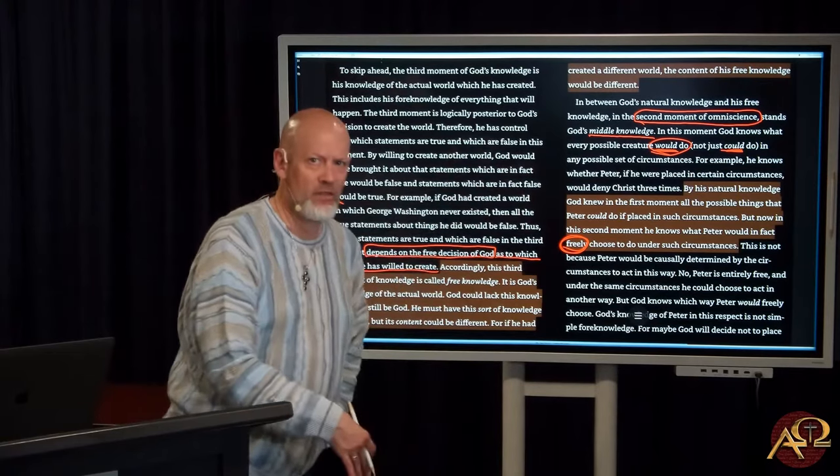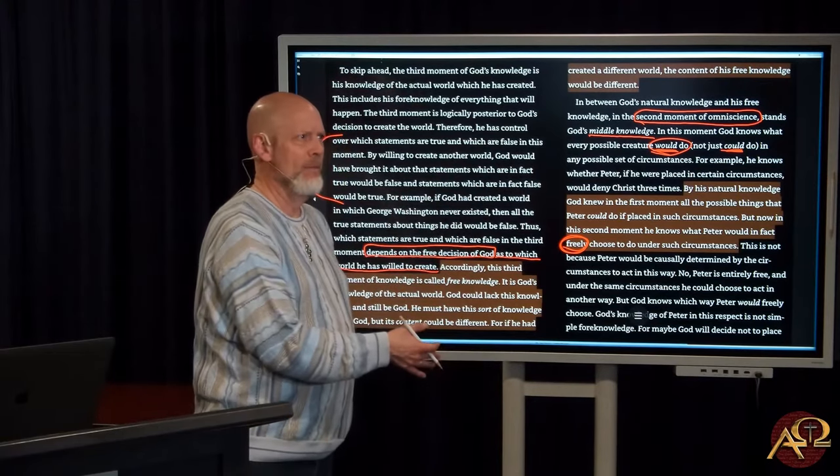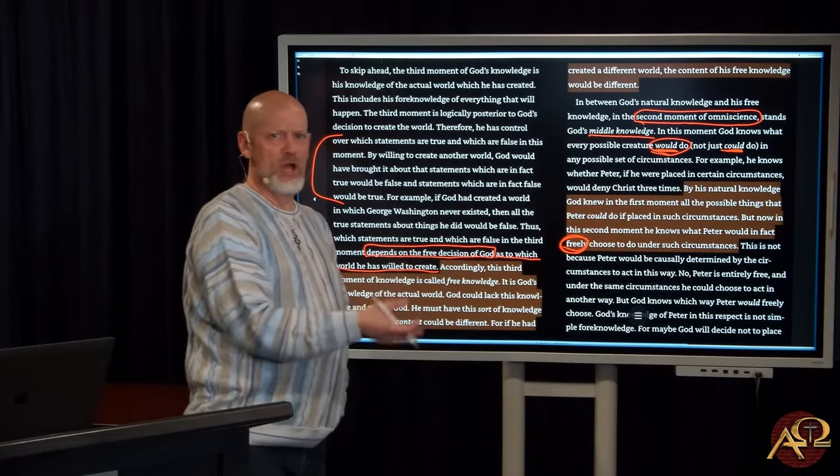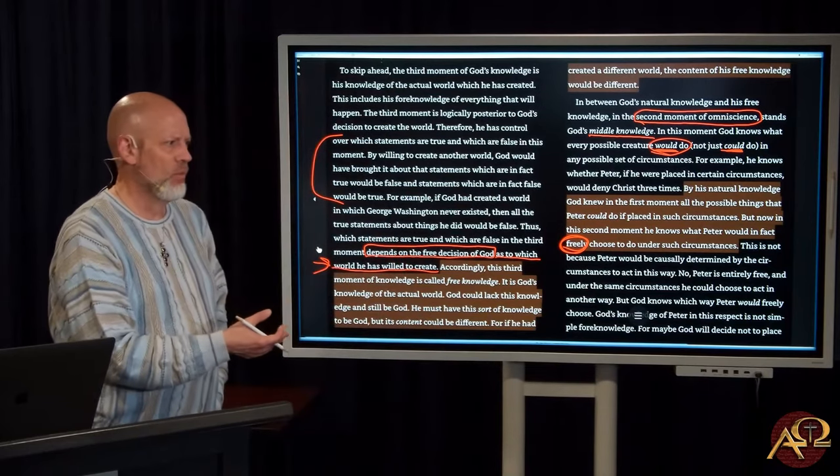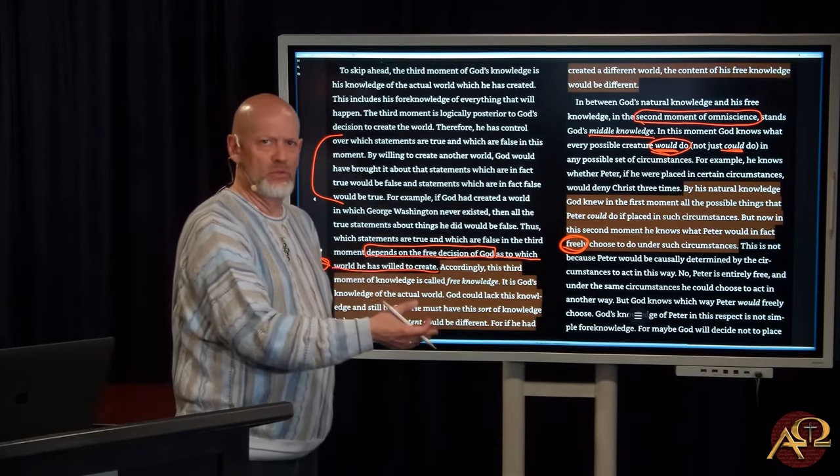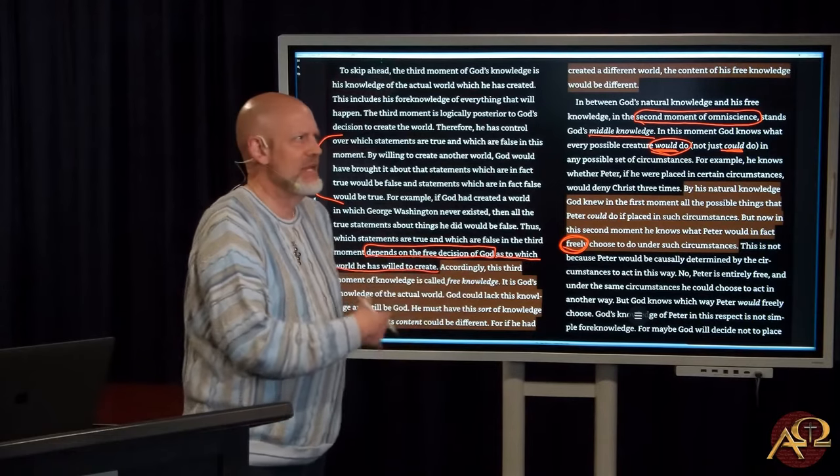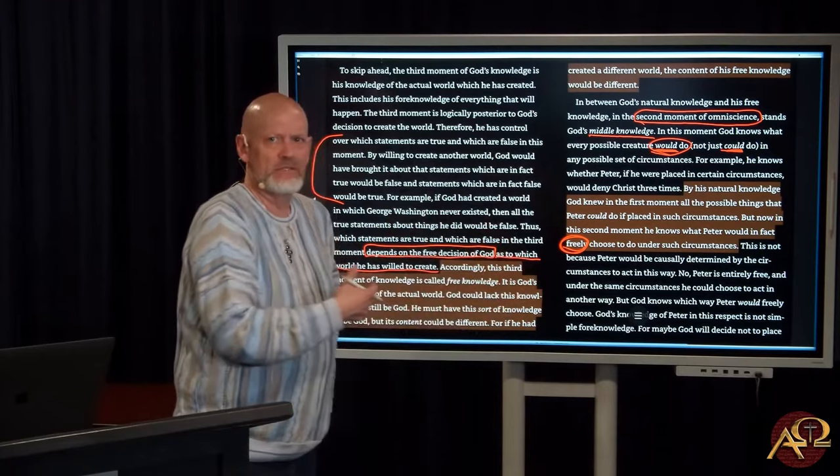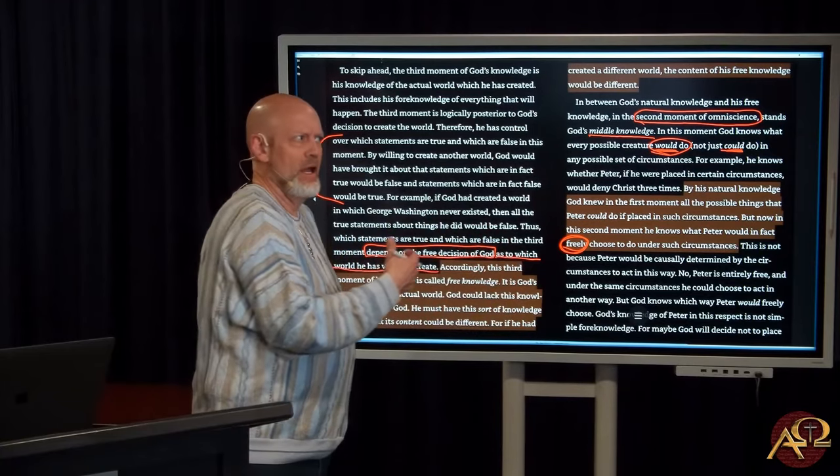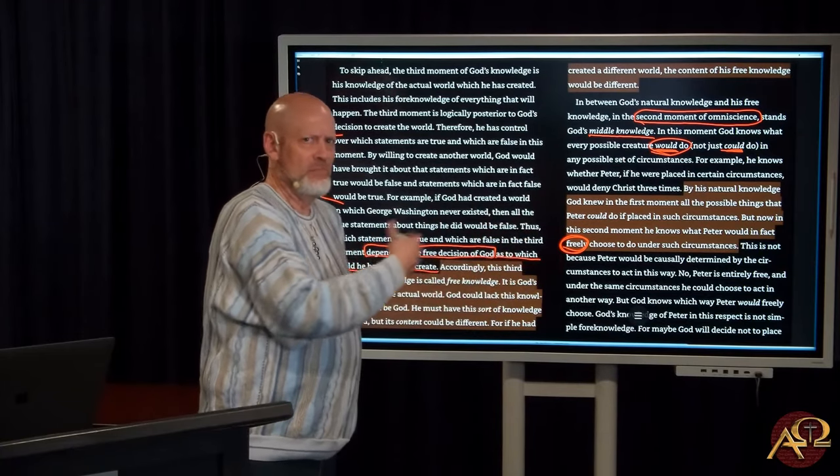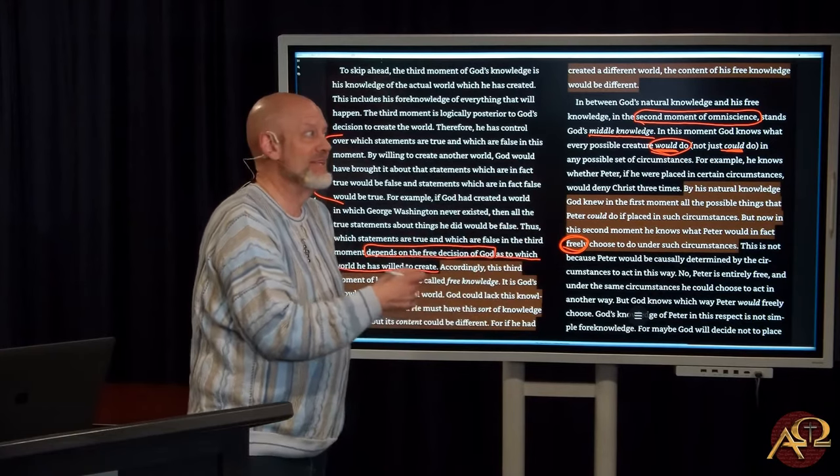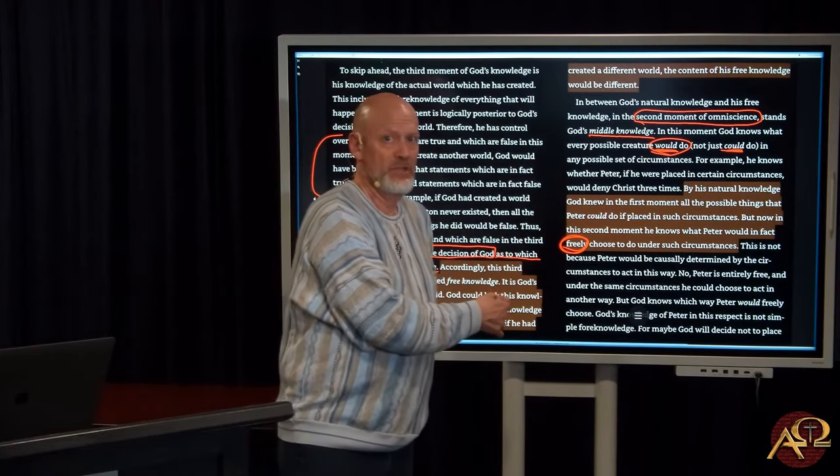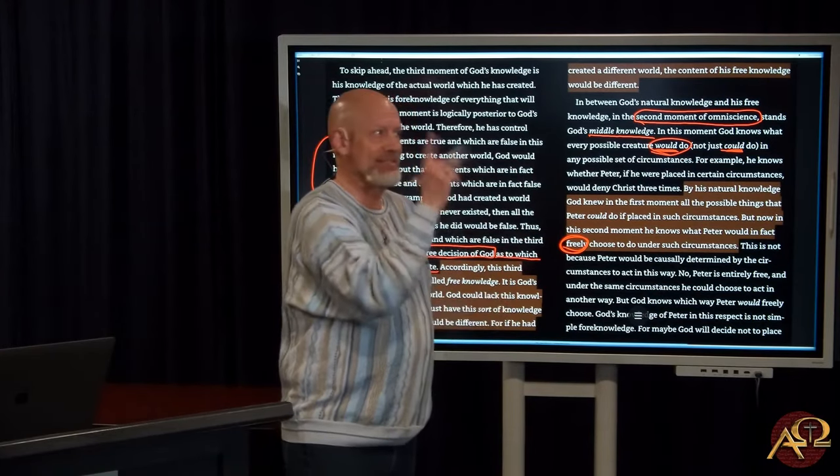God determines how tall we are and God determines our genetics and our level of intelligence and our health, and there's just so many things that are a part of the decree. But remember, middle knowledge is before all this, and somehow God could know what Peter would do in any given situation. It's like Peter just has this existential existence, and God hasn't chosen to create Peter yet and God doesn't get to define Peter. That's the issue.